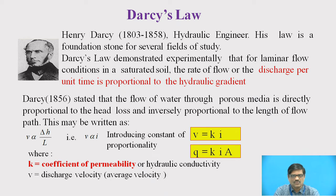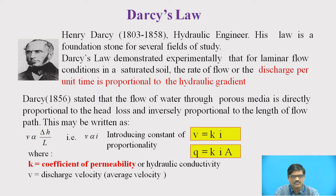So what he said is that for a laminar flow condition, the rate of flow or the discharge per unit time is proportional to hydraulic gradient. In the equation, V is directly proportional to hydraulic gradient, which we denote by I, which is nothing but the head loss per unit length of flow — that means delta H upon L.